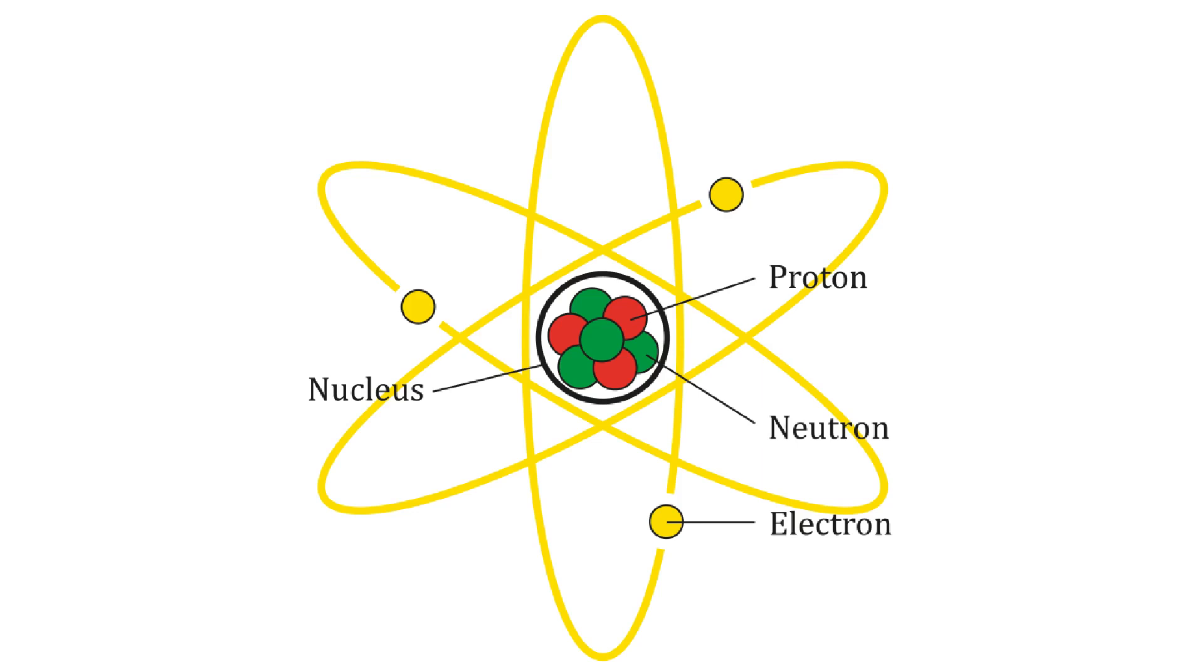These include protons, neutrons, and electrons. The nucleus of the atom is made of nucleons—protons and neutrons—while the outer shell of the atom is composed of electrons.